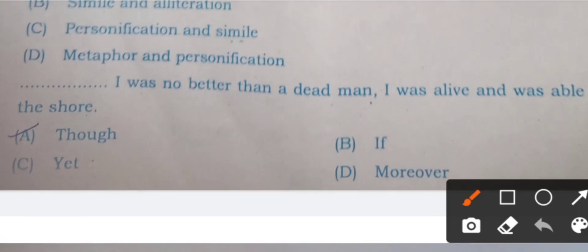Question 75: Though I was no better than a dead man, I was alive and was able to reach the shore. Here you have to fill a conjunction. Four conjunctions are there. Students, I want to tell you that I have already made 15 videos on parts of speech: noun, pronoun, adjective, adverb, verb, conjunction, interjection, and preposition. If you have not watched these videos and if you want to prepare for competitive examinations, watch these videos on my YouTube channel Easy English NCERT Learning with Jinderpal.